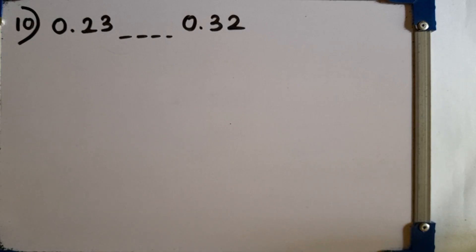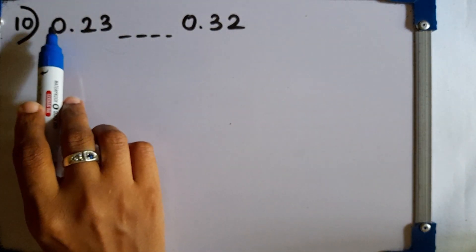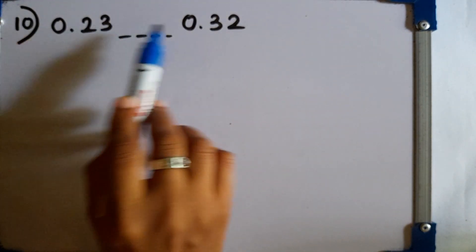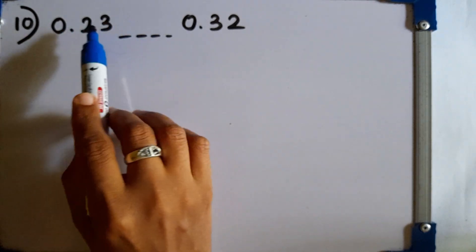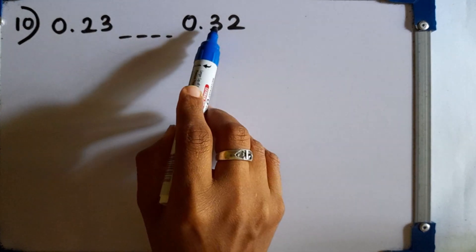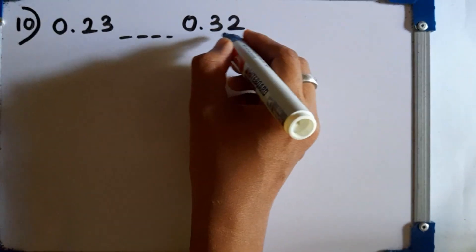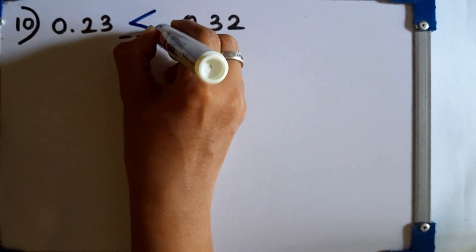Question number 10: fill in the blanks using the greater than or less than symbol. The whole number parts are equal. Then looking at the first decimal place, here we have 2 and here 3. So 0.32 is the largest number — 0.32 is greater than 0.23.